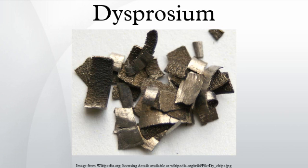Dysprosium is a chemical element with the symbol Dy and atomic number 66. It is a rare earth element with a metallic silver luster. Dysprosium is never found in nature as a free element, though it is found in various minerals such as xenotime. Naturally occurring dysprosium is composed of seven isotopes, the most abundant of which is 164-Dy.